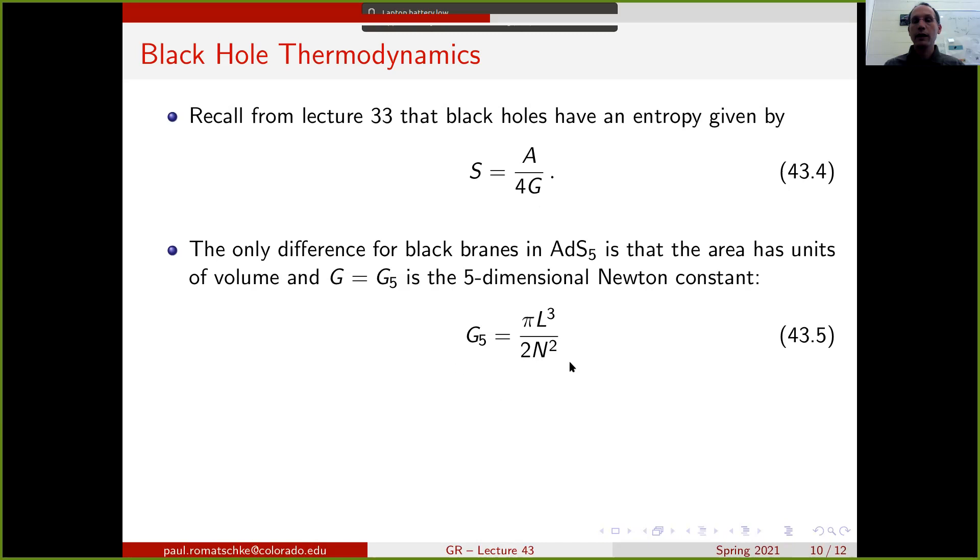This five-dimensional Newton's constant is linked to the property of the SU(N) gauge theory through this formula here, which is more non-trivial to derive, but can be done if you follow the details of the compactification.